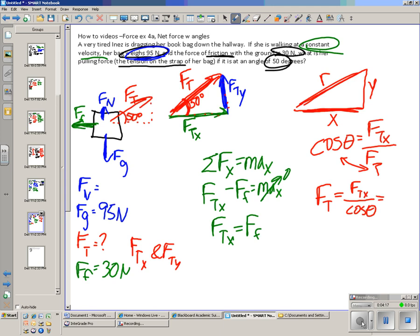I have 30 newtons divided by the cosine of 50 degrees. Tapping into my calculator, and my tension is equal to 46.7 newtons. Yeah!